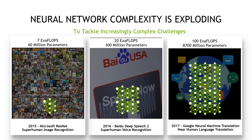The Deep Speech 2 network was built of 300 million parameters and needs roughly 20 EXAFLOPs to train. In 2017, Google announced that the famous Google Neural Machine Translation project would be done only on deep learning. The goal is to have a direct translation of any website in any language directly into any other language. This network is built of 8,700 million parameters and needs 100 EXAFLOPs for training.